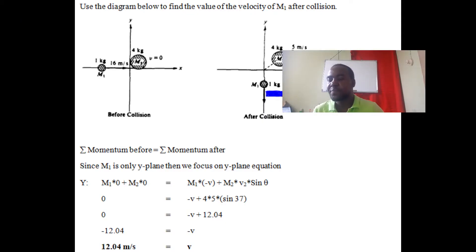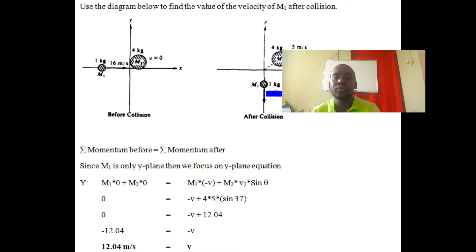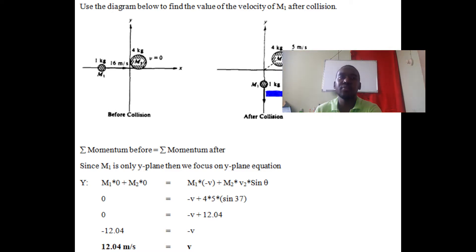Question one: we have two masses. The first mass was at rest, the second mass moving to the right at 16 meters per second. It caused the first mass to move at an angle of 37 degrees, and the second mass moved vertically downwards at unknown velocity v. The question asks us to find what that v is.